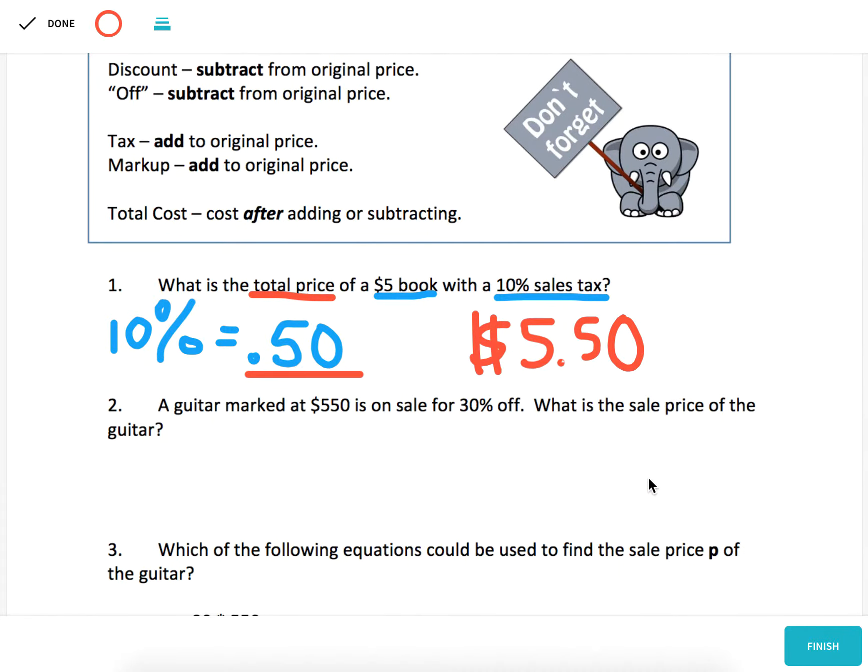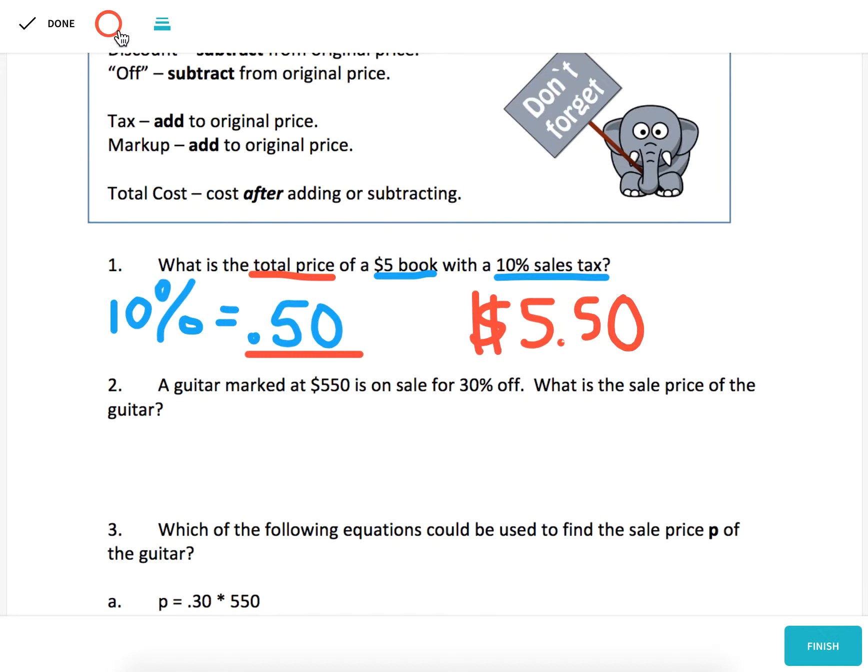Number two. A guitar marked at $550 is on sale for 30% off. This word off means subtraction. It means we're going to have to find 30% and subtract it away. What is the sale price of the guitar? So 10% of $550 would be $550 divided by 10 or $55. So 30% is three of those, three $55s or $55 times 3.